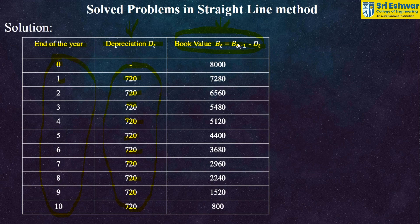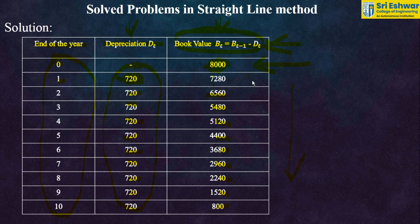The book value is found using Bt = Bt−1 − Dt. For year zero, the book value is 8000, which is the initial cost of the machine. This value reduces gradually each year. For year one, book value = 8000 − 720 = 7280.